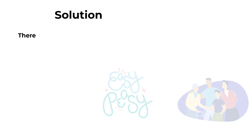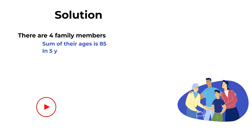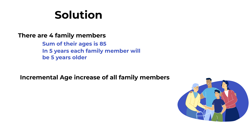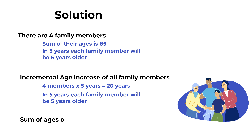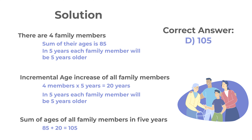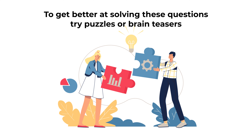What's interesting about this problem is that it is simpler than you think — the key is not to overthink it. There are four family members and the sum of their ages is 85. In five years each family member will be five years older, so the incremental age increase for all members is 4 × 5 = 20 years. The sum in five years is 85 + 20 = 105. The correct choice is D, 105.